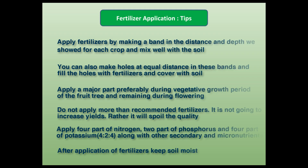Soul of Krishi suggests a few tips for better nutrient absorption. Apply fertilizer by making a band at the distance and depth shown for each crop and mix well with the soil. You can also make holes at equal distances in these bands, fill with fertilizer, and cover with soil. Apply a major part of the fertilizer preferably during the vegetative growth period — when leaves and branches are coming out, not fruits — and the rest during flowering and fruit formation.